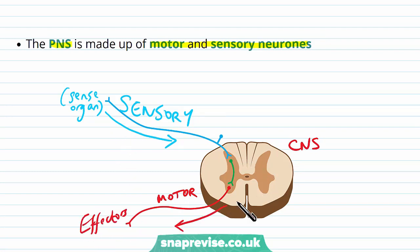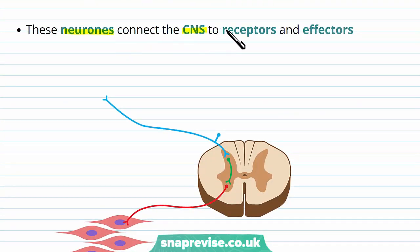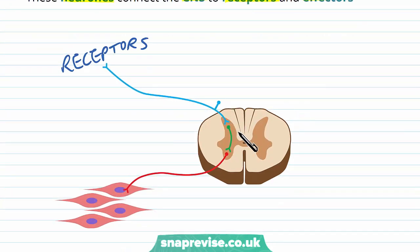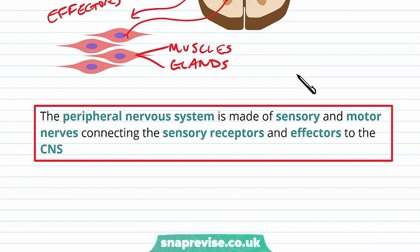Sensory neurons go to the CNS, and the neurons connect the CNS to the receptors and the effectors. The receptors at the beginning of the sensory neurons are detecting changes in our environment. Once this information has gone to the CNS and been processed, motor neurons send instructions out to effectors. These effectors can usually be divided into muscles or glands. So by definition, the peripheral nervous system is made of sensory and motor nerves connecting the sensory receptors and the effectors to the CNS.